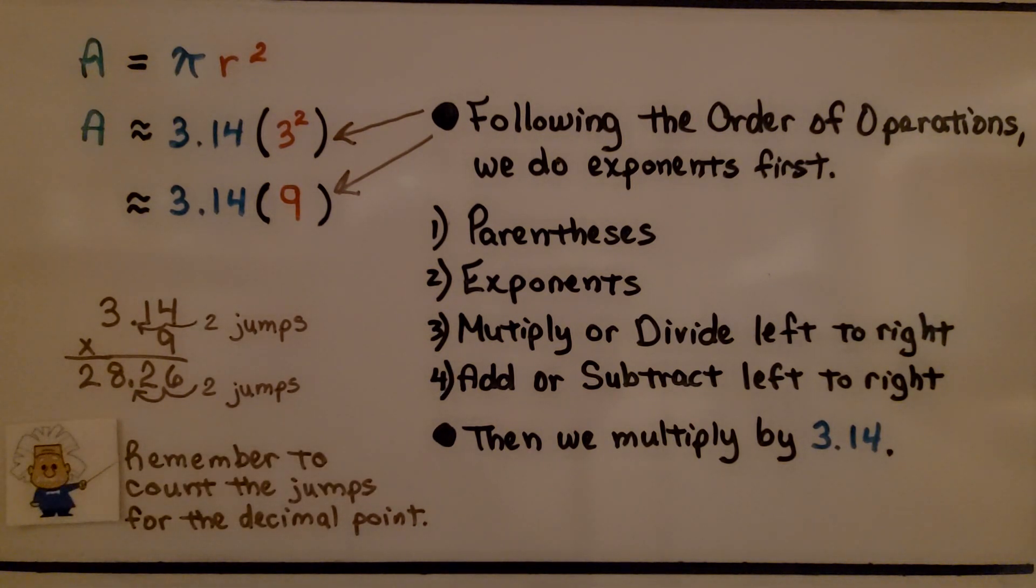So remember to count the jumps for the decimal point. We don't always use calculators. I prefer you to use the longhand multiplication so you get more practice. But there's two jumps in 3.14, so we're going to have two jumps in the product.